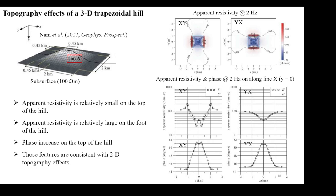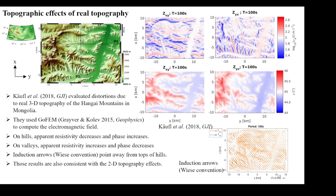Recently, Kafo et al. (2018) evaluated the distortions due to the real topography of the Hangai Mountains in Mongolia, using the Core FEM code to compute the electromagnetic field. On hills, apparent resistivity decreases and phase increases; on the other hand, on valleys, apparent resistivity increases and phase decreases. Induction arrows (this convention) point away from tops of hills. These results are also consistent with the 2D topography effects shown before.